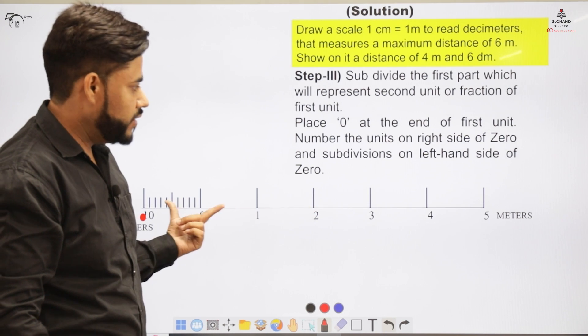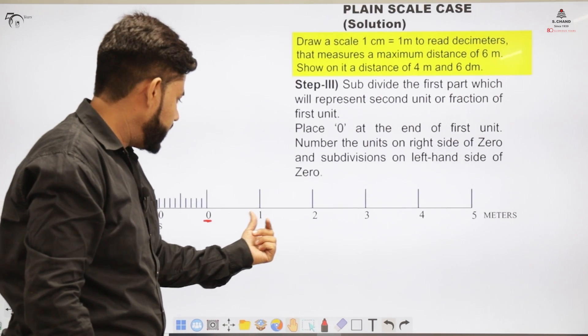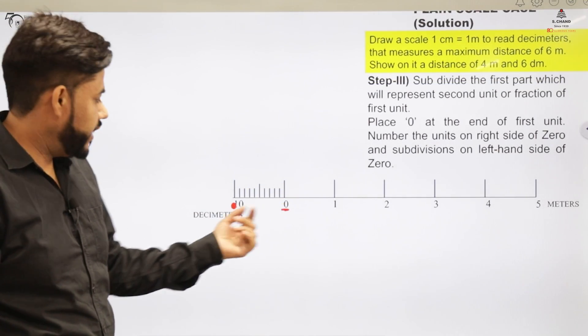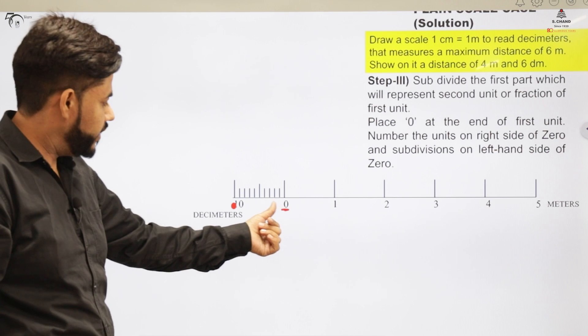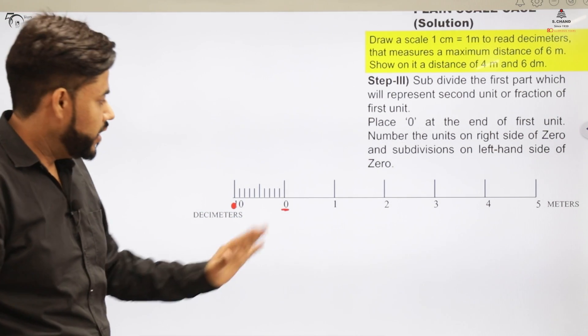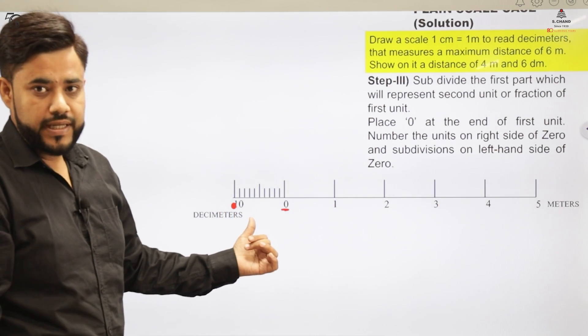So the total scale would be 6 meter scale and here I would be dividing this section into 10 equal divisions. So right from here from this 0 I will be dividing it into 10 equal divisions that denotes the decimeter scale. So here this portion denotes the meter scale, this denotes the decimeter scale.